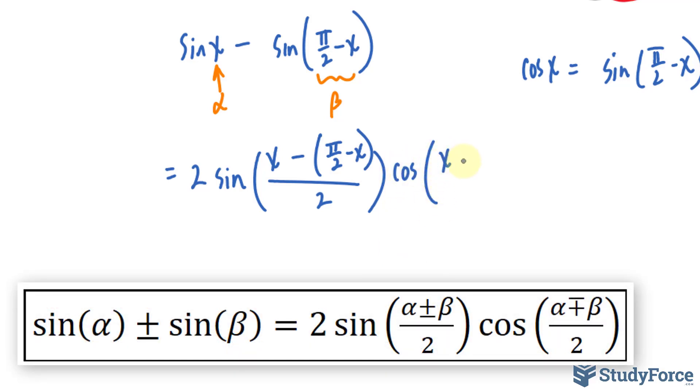Again, alpha is x. And this time, we'll be adding x to π/2 - x over 2.